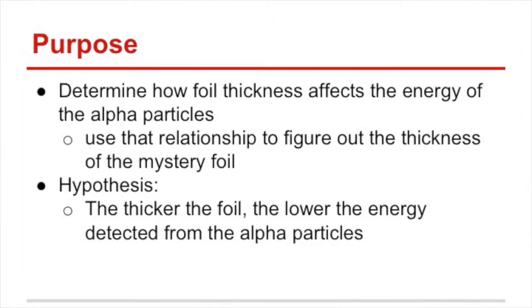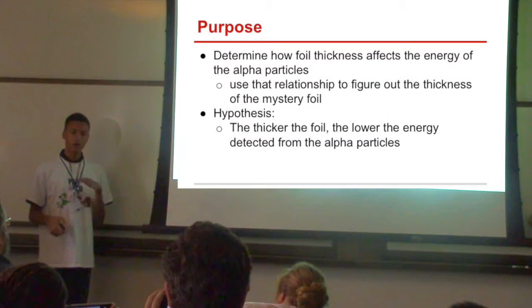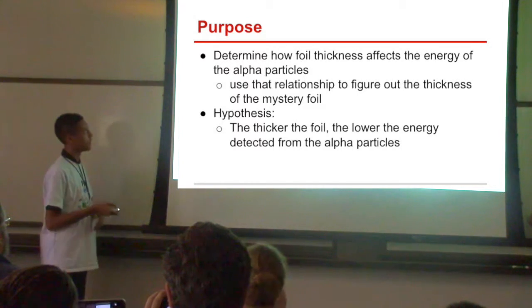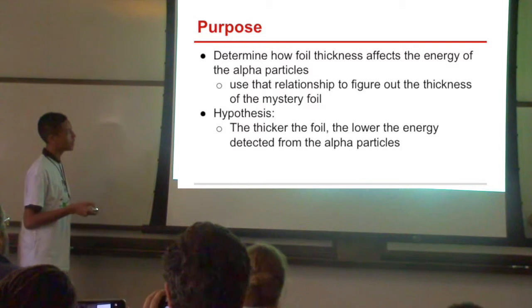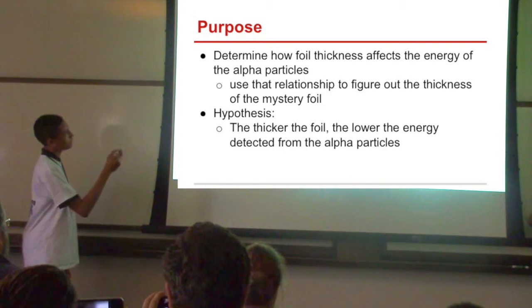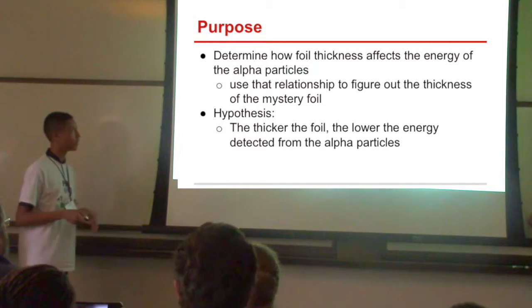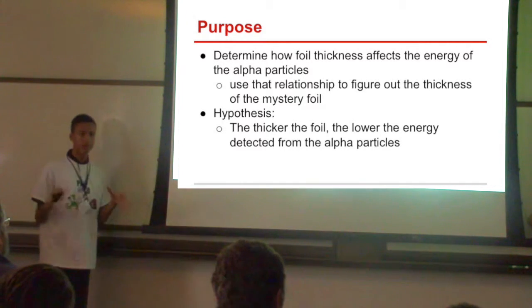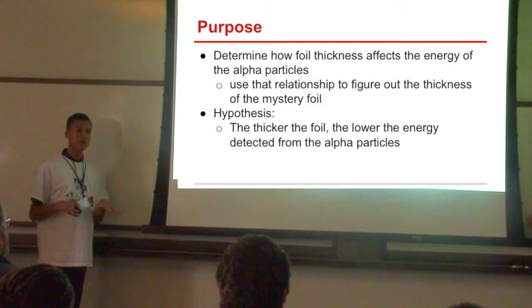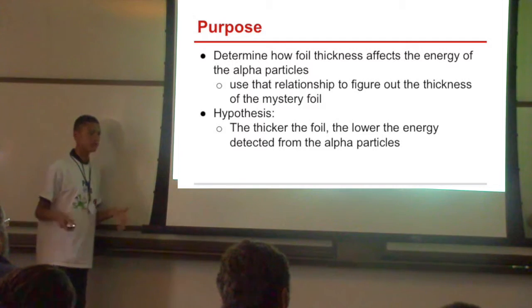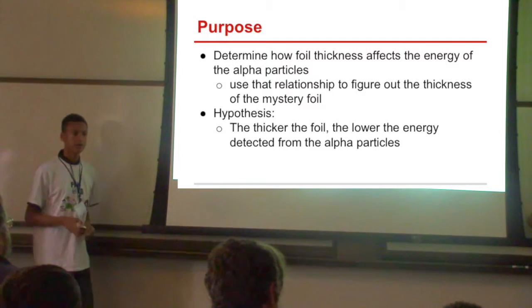The purpose of our experiment was to establish the thickness of certain foils. We were using aluminum foil, and a way to do this would be to use alpha particles, because the thickness might affect alpha particles that we sent at the foil. We thought that the thicker the foil is, the lower the energy would be of the particles that go through the foil, as they would slow down from passing through.